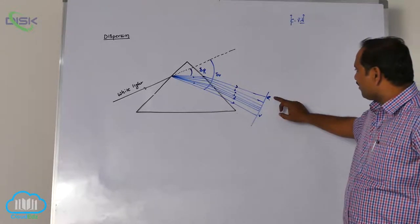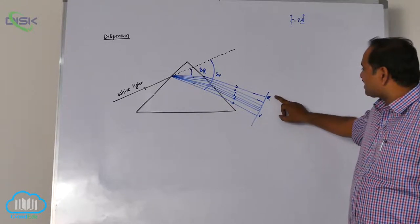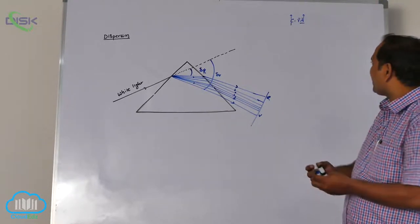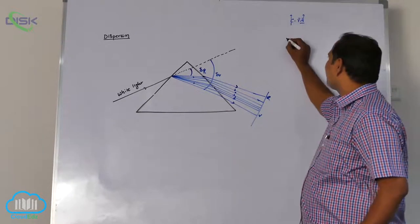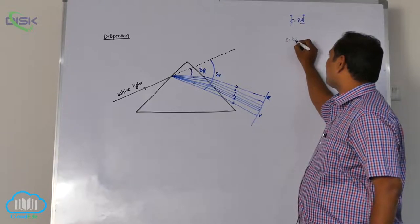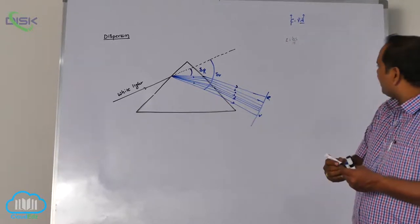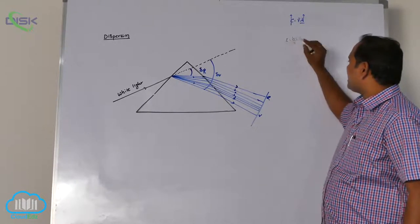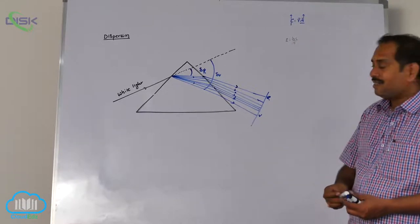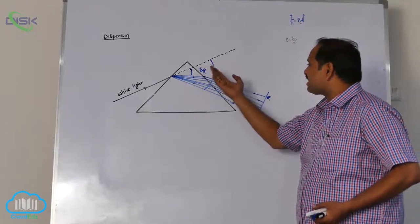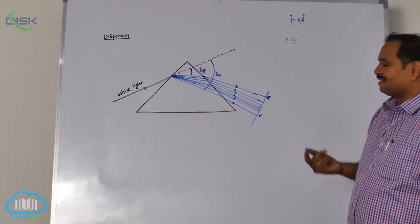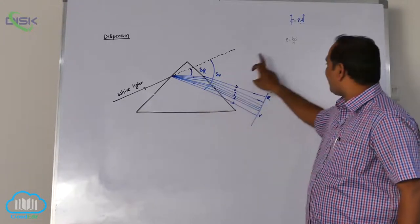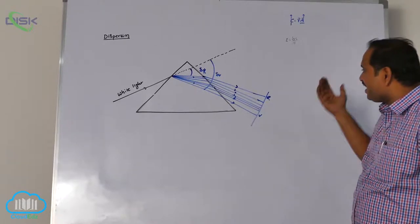This is a very important point. Red color wavelength is more, energy is less — from E = hc/λ, which you learn in chemistry as Einstein's equation. Lambda is more means energy is less, so it deviates less. Violet color wavelength is less, energy is more, so it deviates more.